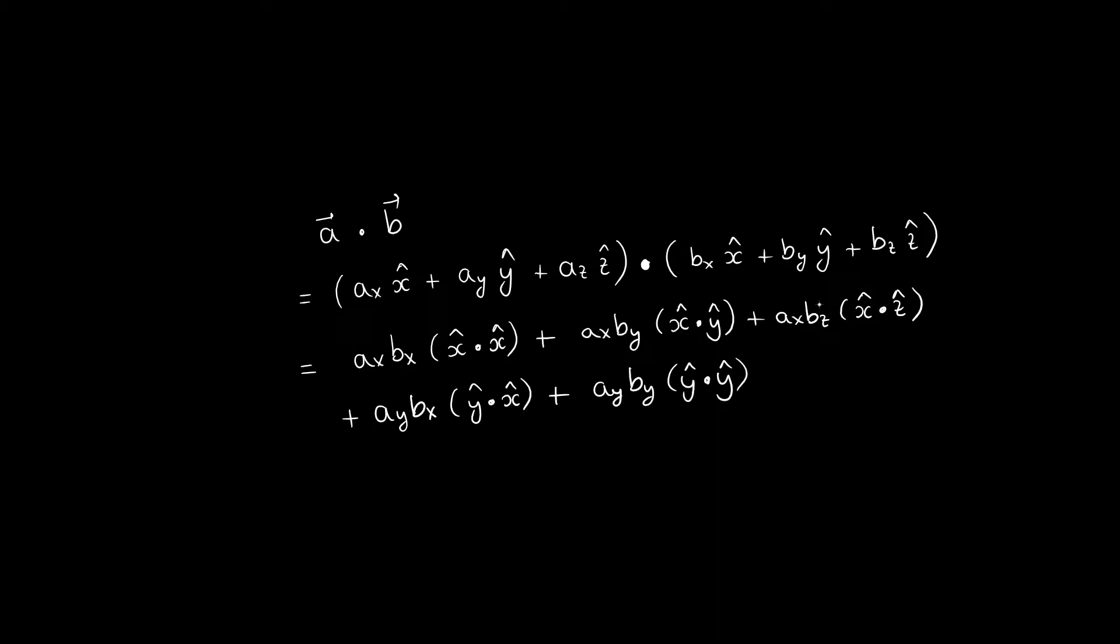Knowing this, we can find an analytical way to calculate the dot product using the components. For example, a dot b can be written using the components. And now we can multiply out these two parentheses, bearing in mind that we are doing a dot product. Therefore, we get the following.